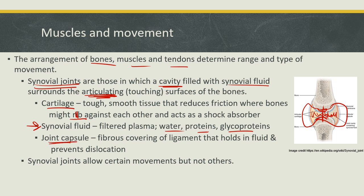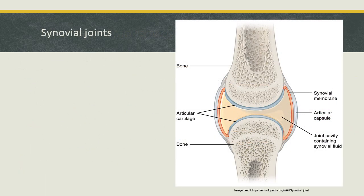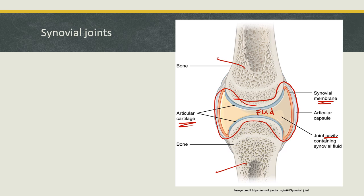The joint capsule surrounds the whole entire joint. It holds in the fluid and also prevents these bones from dislocating or going out of joint. Synovial joints allow for certain kinds of movements but not others. In a close-up look at a synovial joint, we've got bone and bone, a capsule or membrane surrounding the whole thing that holds the synovial fluid inside the cavity, and some cartilage. The cartilage, the fluid, and the capsule all hold together these joints and allow the bones to move without grating against each other.